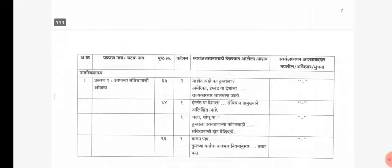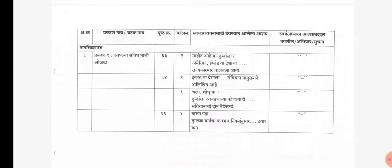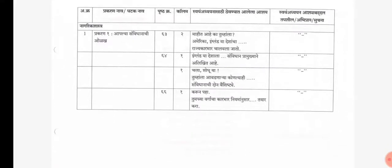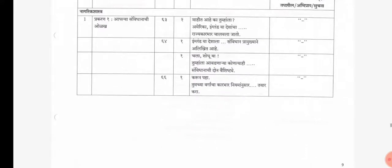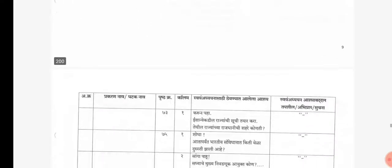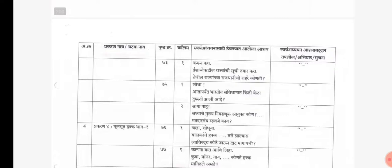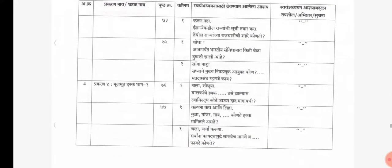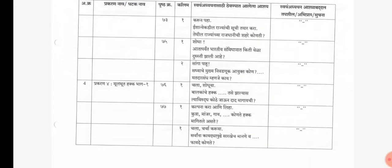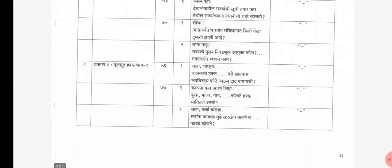Now let's go to Civics. In Civics, first chapter, on page number 63, the second column activity is cancelled. Page number 64, the first column, both activities are cancelled. Page number 66, first column activity is cancelled. Page number 73, first column activity is cancelled. Page number 75, first column and second column activities are cancelled.